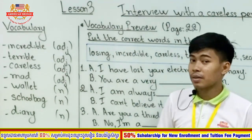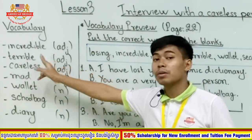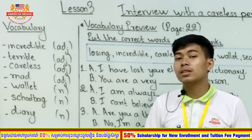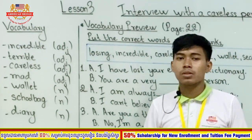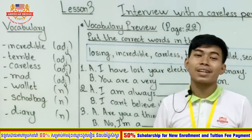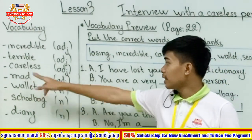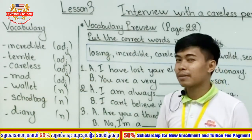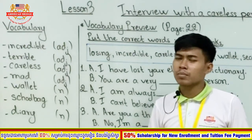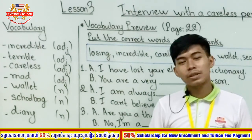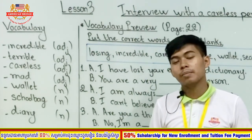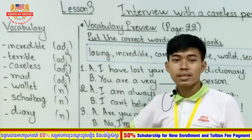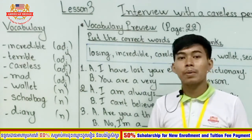But the original meaning of 'incredible' is something that is hard to believe. For example, if I say 'I have 100 million dollars,' my friend would say 'Oh, incredible!' — it's hard to believe. The next word is 'terrible,' which means very bad. For example, if your parent asks how many points your teacher gave you and you say 'only one point,' your parent might say 'Oh, that's terrible — you have to study harder.'